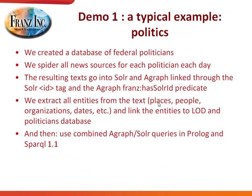The first demo is the typical kind of project our customers do. The example I'm going to show started with creating a database of federal politicians. You spider all the news sources for each politician each day, get a bunch of text back from the web, then take each text and store it both in Solr and AllegroGraph. You make sure the Solr entry has an ID tag and AllegroGraph has a predicate called has-Solr-ID, and they both refer to the same number. Then you extract all the entities from the text — places, people, organizations, and dates — and link these entities to the linked open data cloud and the politicians database.